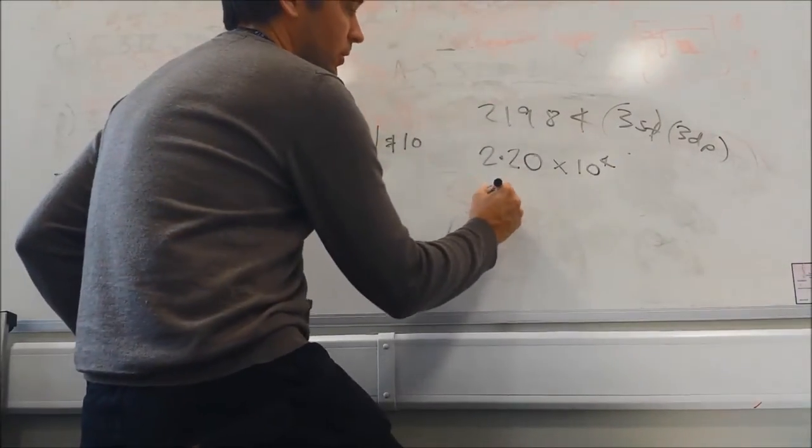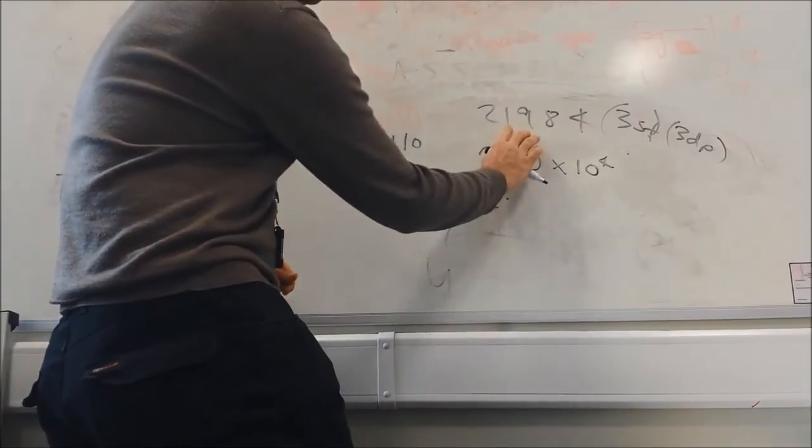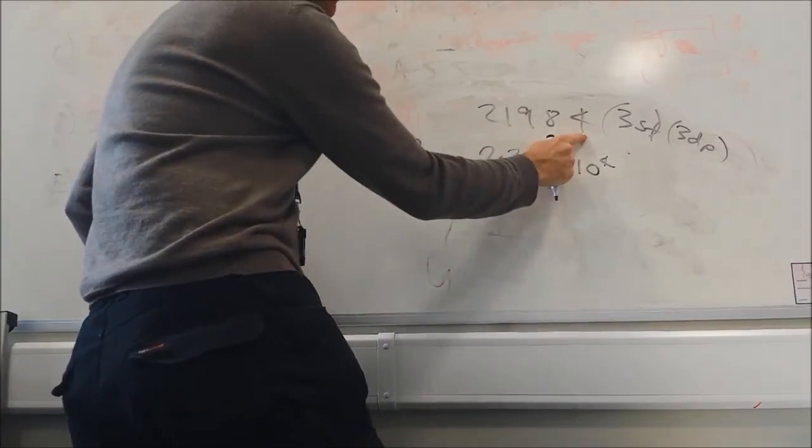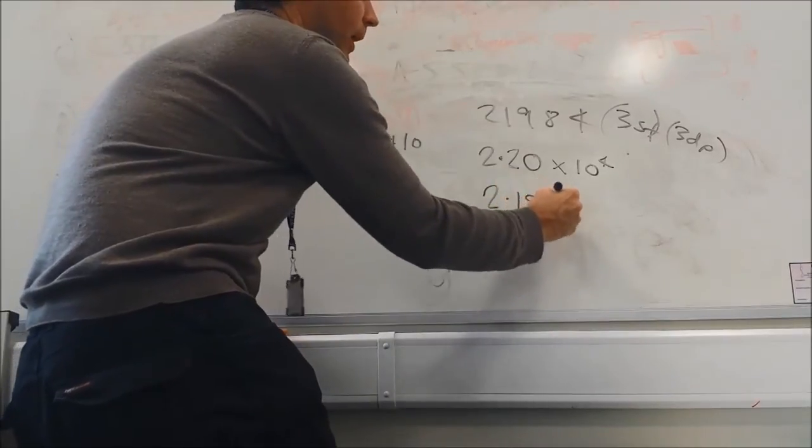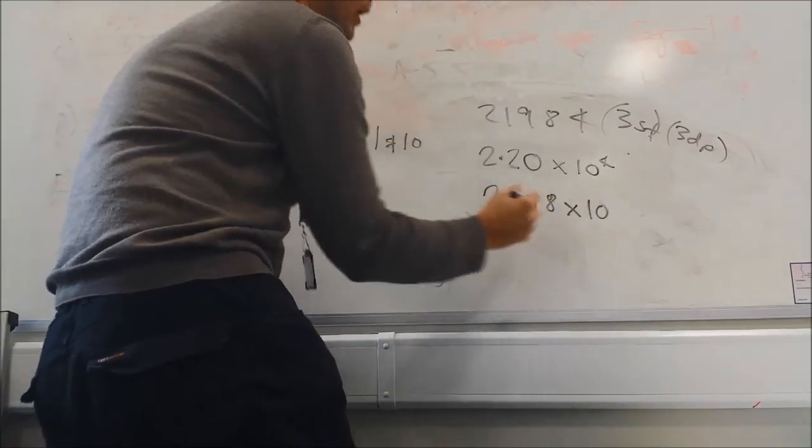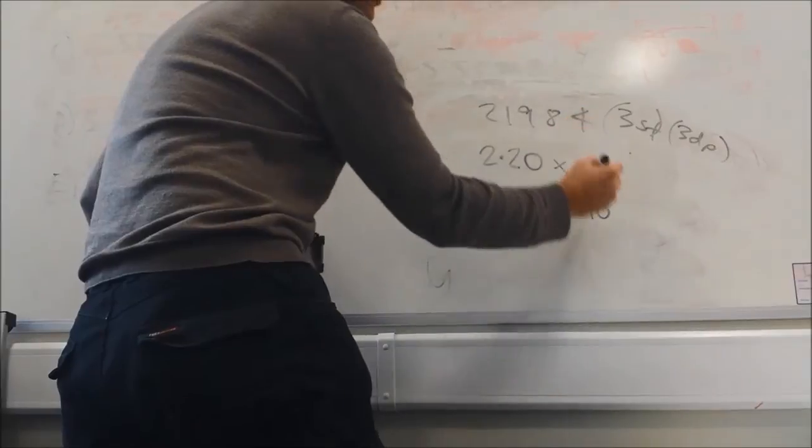So three decimal places, it'll be 2 point, and then these are the three numbers. The 4 will have no influence on the 8, so it'll be simply 2.198 times 10 to the power, again, 1, 2, 3, 4. That doesn't change.